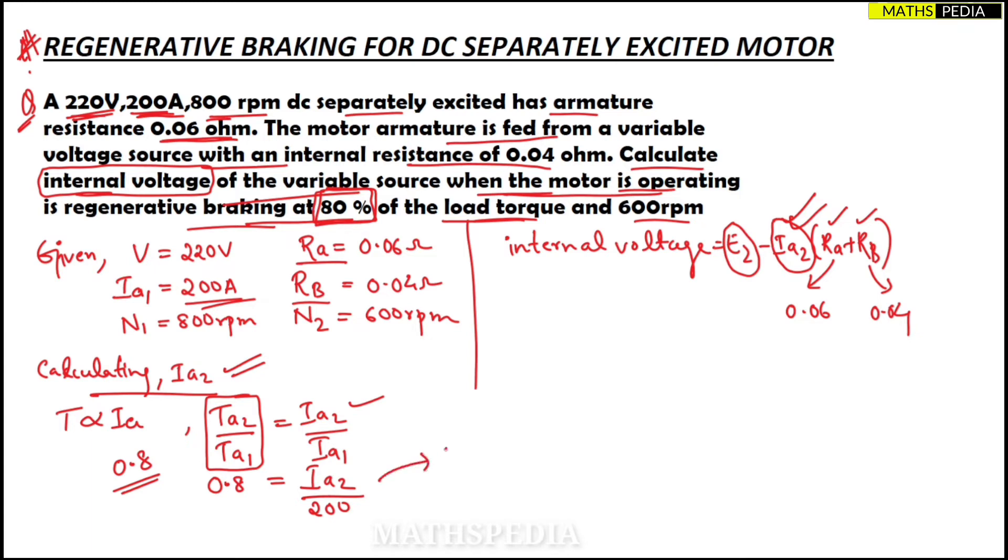So from this I can get Ia2 = 0.8 × 200 = 160 amps.